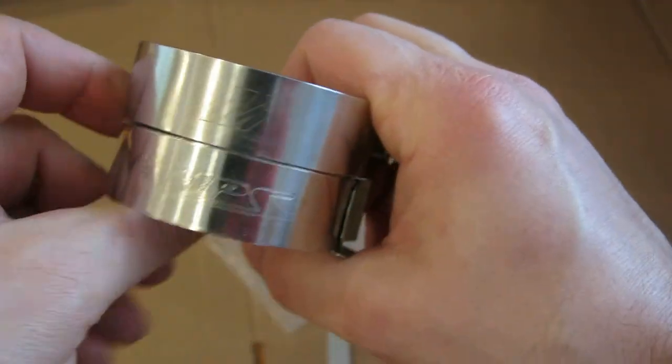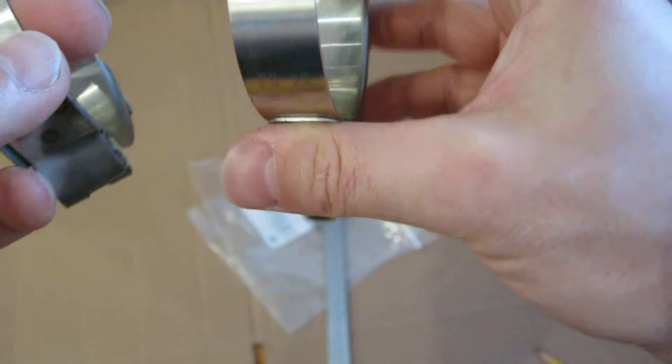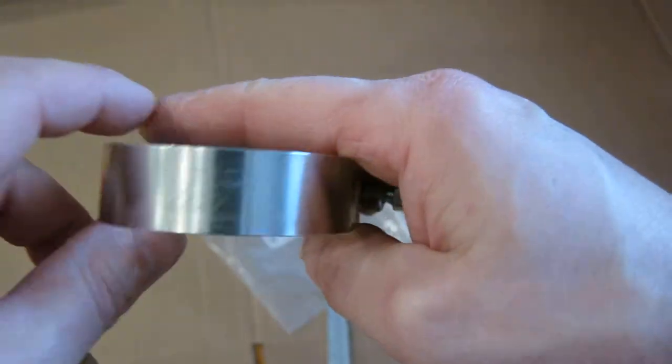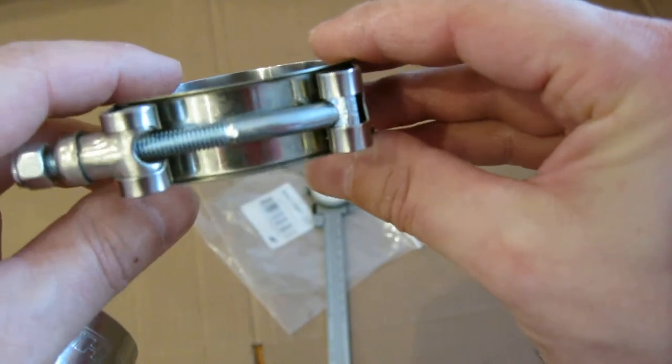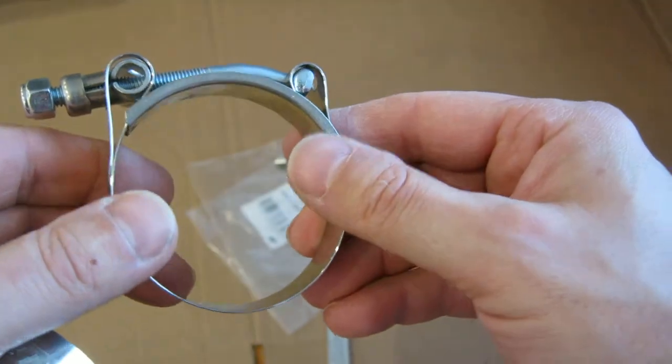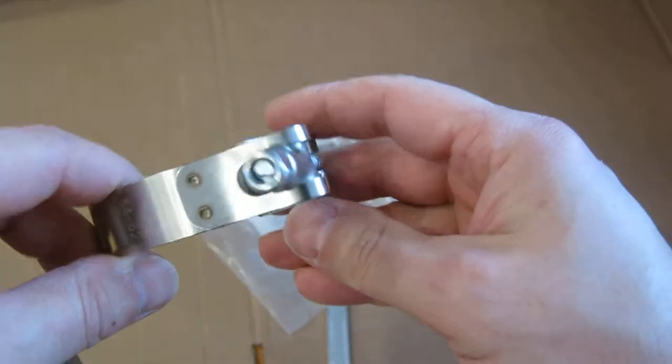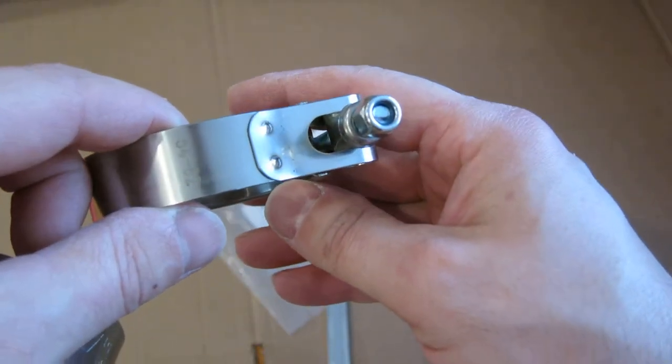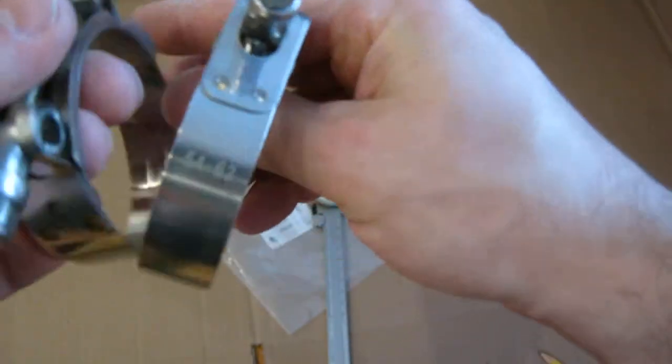I've been reading a lot of reviews about these clamps that come with the hose kits, with the Mishimoto stuff, and people are complaining about them. I've seen pictures of them all bent up and people are saying they're really low quality. So I picked up these HPS clamps which are highly rated so we could compare them.